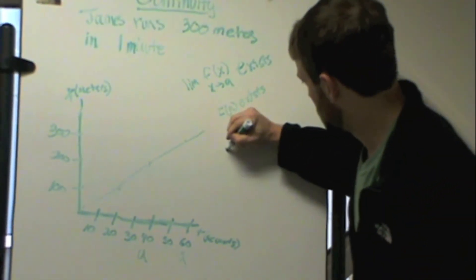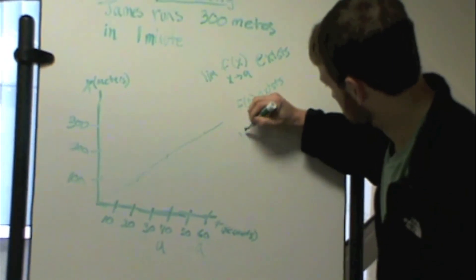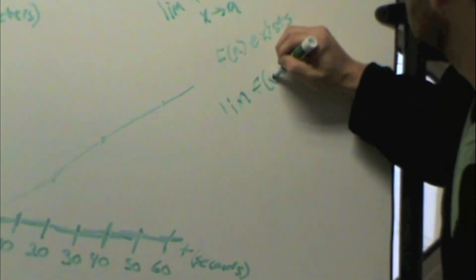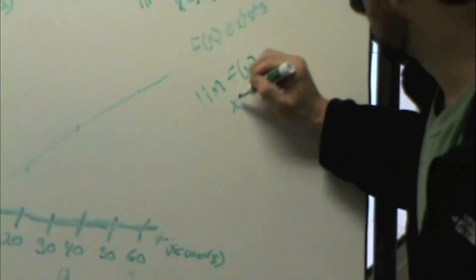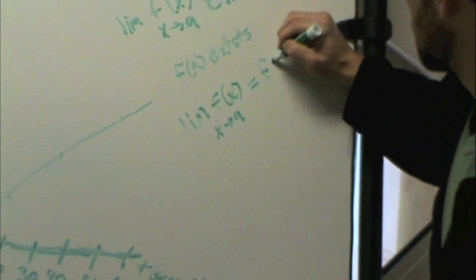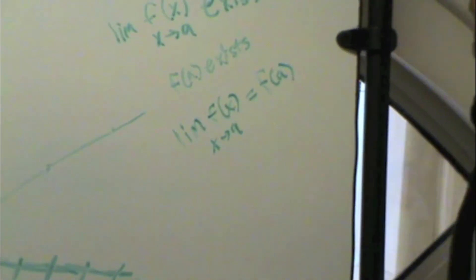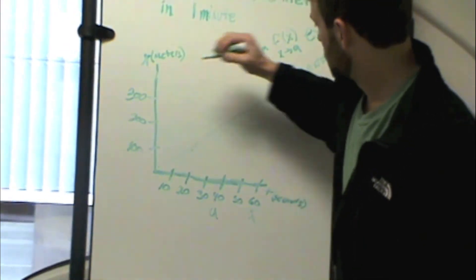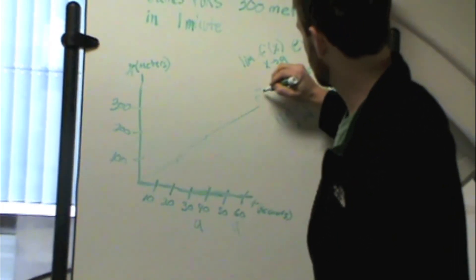And then we also know that the limit of f of x as x approaches a equals f of a. So to see this, we know that this would be f of x...